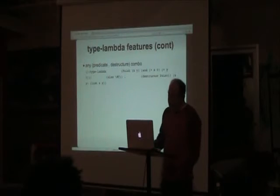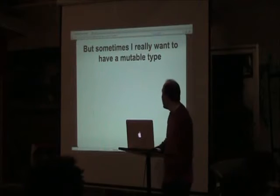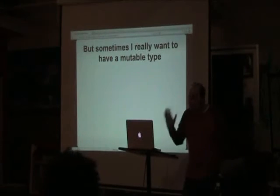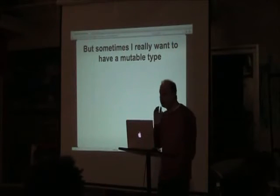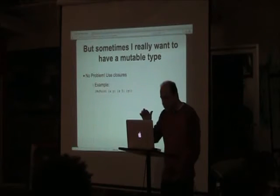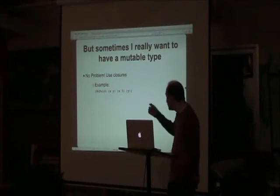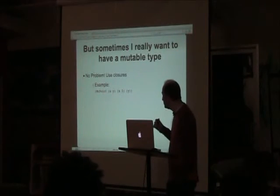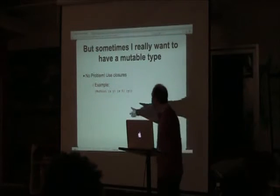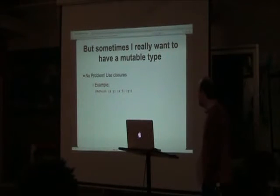You can also use the predicate/destructor approach for other type systems or existing code. A common request is: I like the system but sometimes I want just one mutable variable. The way I solve that is using closures. In this case I have a mutable-point with x and y where x and y are actually functions — calling x with 5 sets x to 5 and returns the value of y.